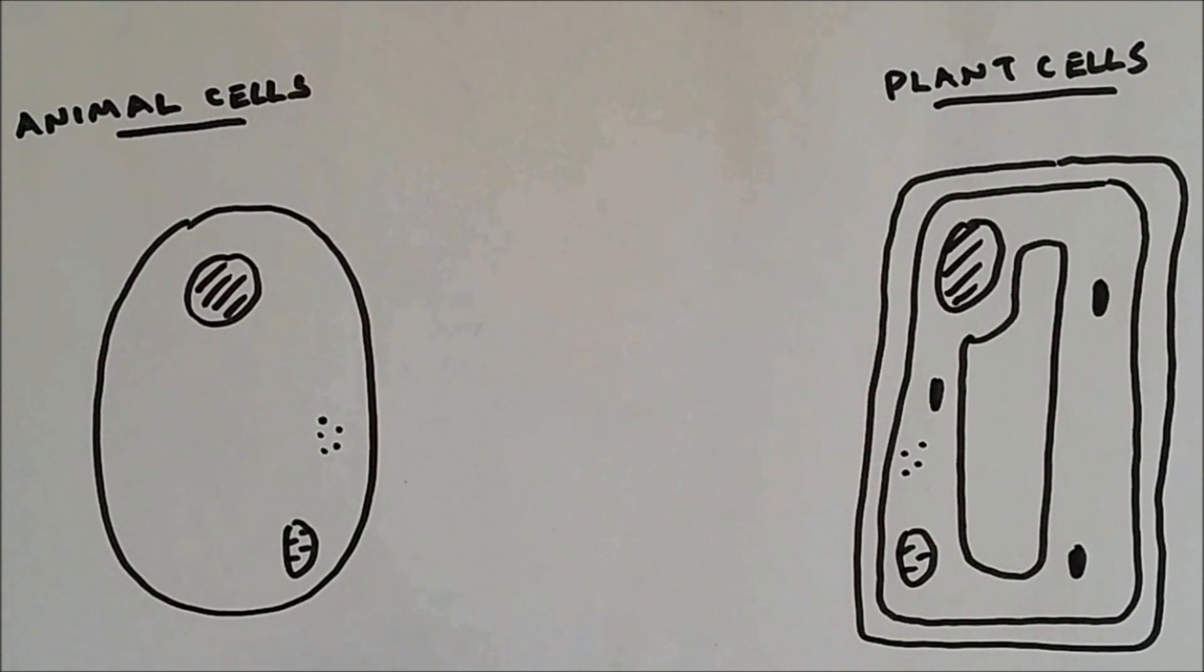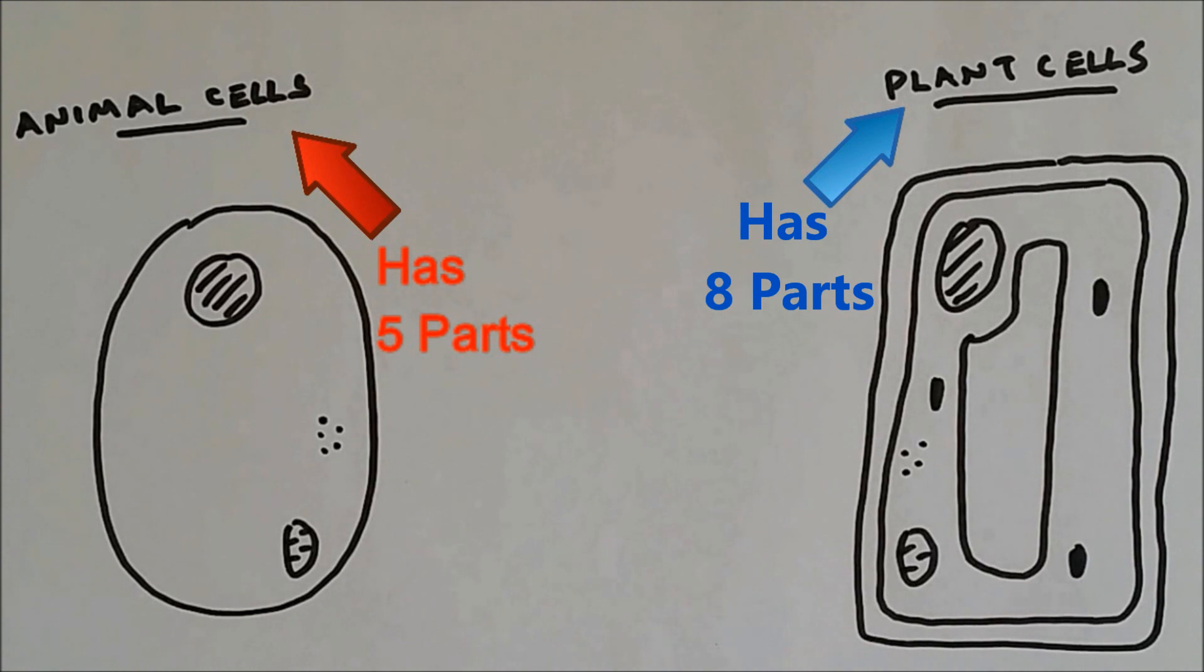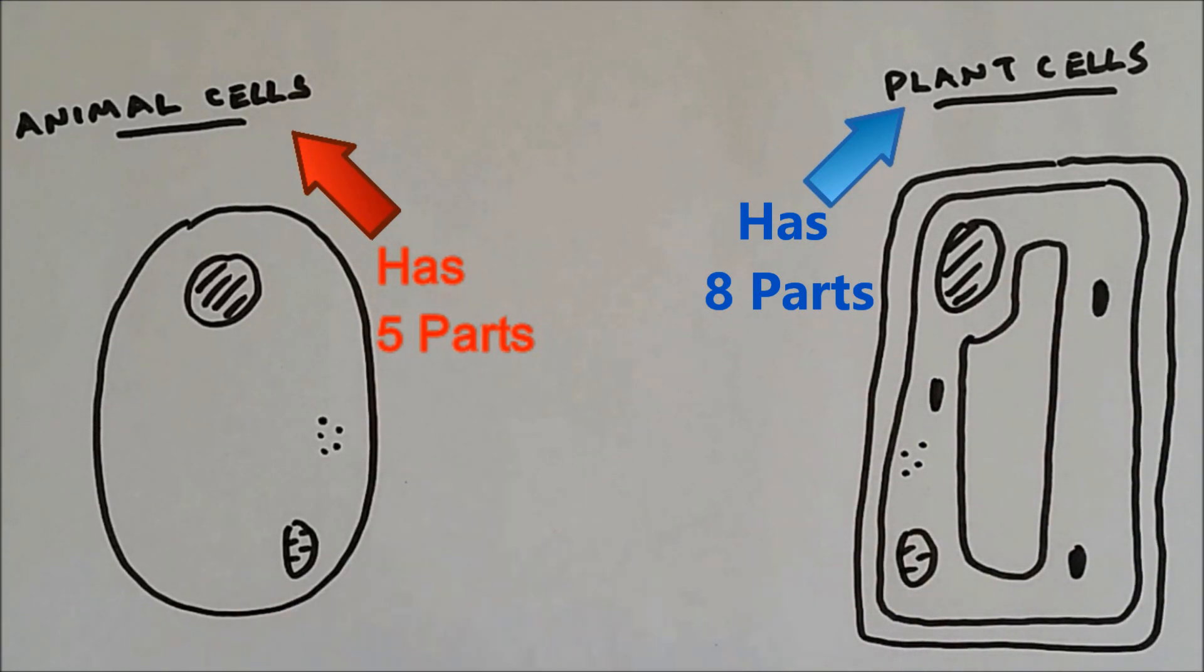So this is a typical structure of an animal cell and a typical structure of a plant cell. You can see that plant cells have many parts compared to animal cells.